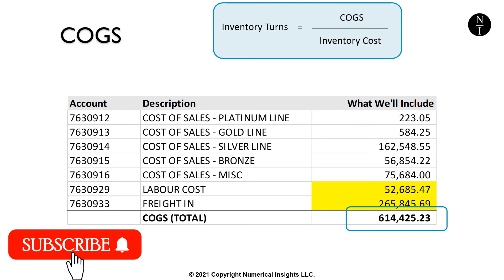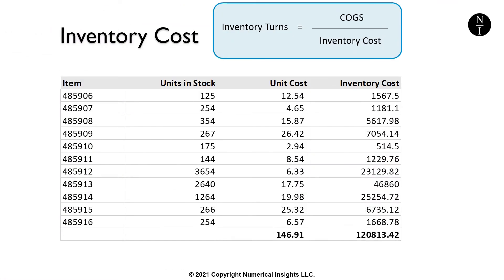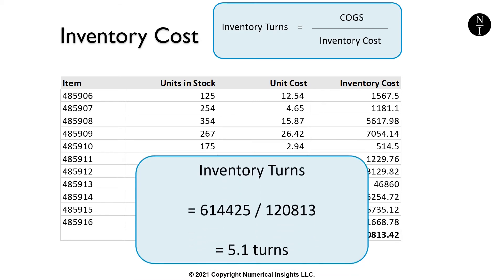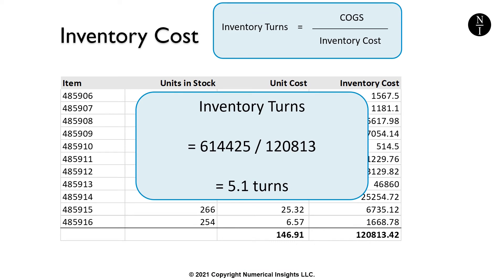Let's move on to see what value we put in the denominator of our equation for the inventory cost. There are two popular choices. In some cases, the inventory value is the average cost of the inventory at the start of the year and the inventory cost at the end of the year, if we're calculating our metric annually. In other cases, people may choose to use the end of year inventory cost. We calculate the inventory cost for each item by multiplying the units in stock by the unit cost, then add up all items to get the total. Our turns are 614,425 divided by 120,813, which is approximately 5.1 turns.